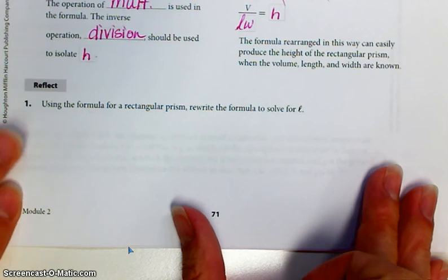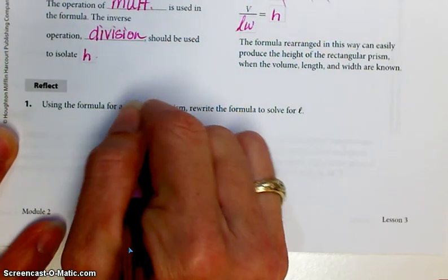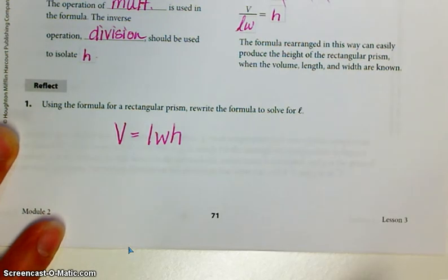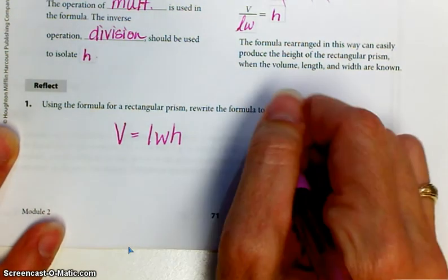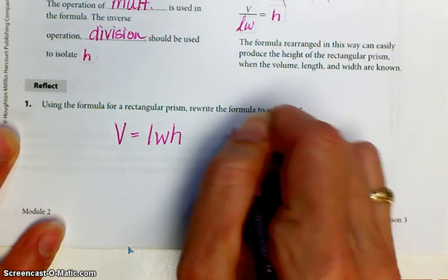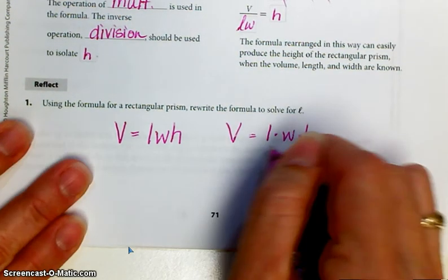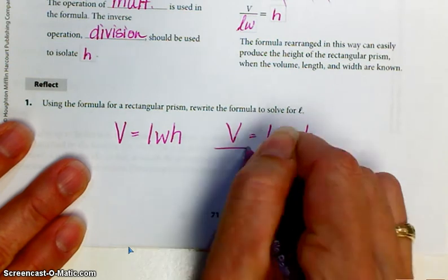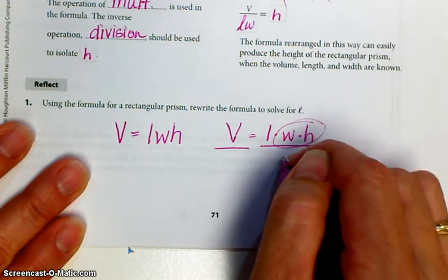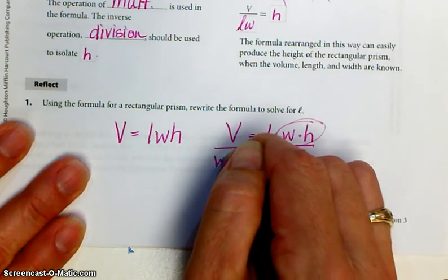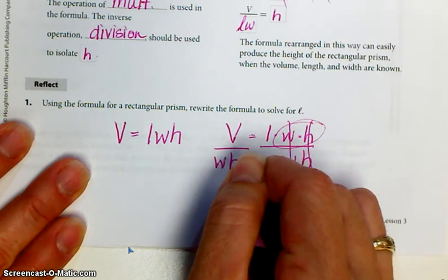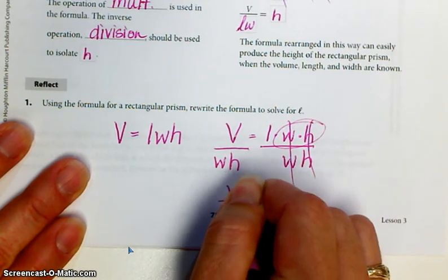All right, it says using the formula, we're going to go back to the original formula. Volume equals length times width times height. Rewrite the formula to solve for l. Well, remember, it's length times width times height is equal to volume. So all I really have to do is just say divide both sides by what I want to move. This time, I need to move width and height. So I'm going to divide by width and height on both sides. Gets rid of it here.